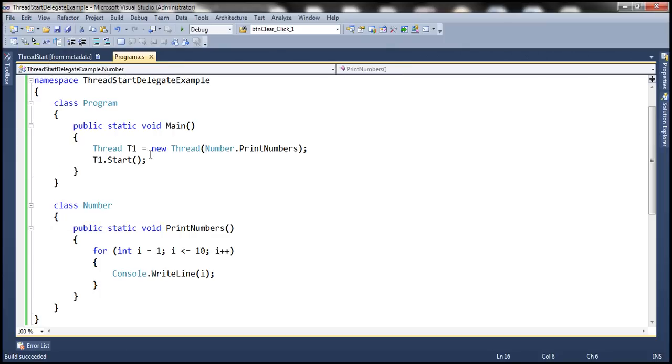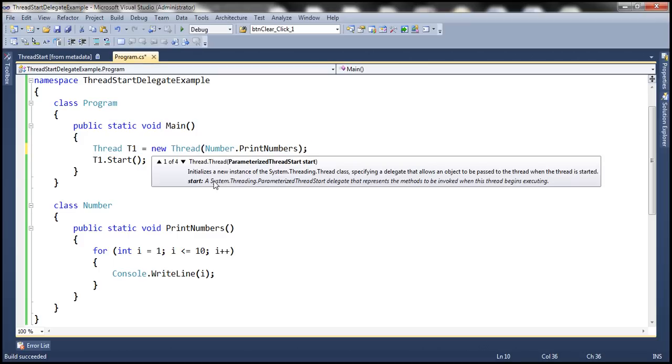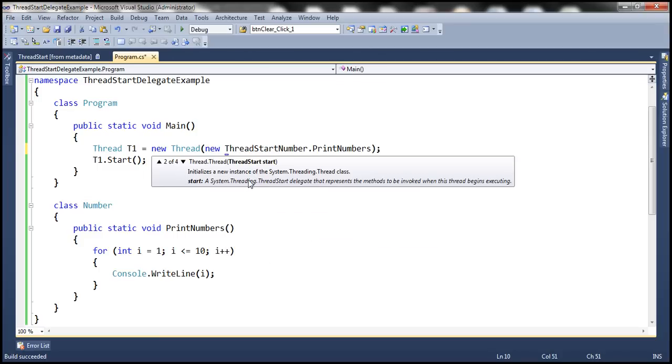Now let's rewrite this line right here using ThreadStart delegate. First of all, notice the constructor of the Thread class. There are four overloaded versions and if you look at the second overloaded version, it expects a parameter of type ThreadStart. And what is this ThreadStart? It is a delegate.